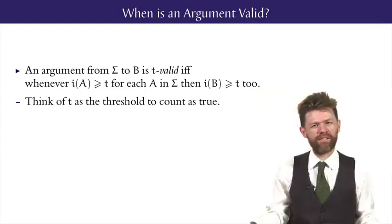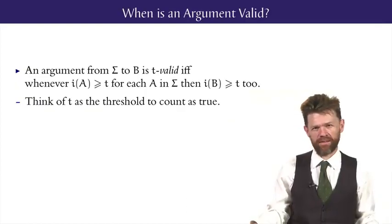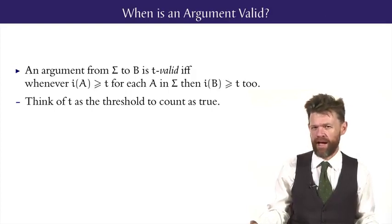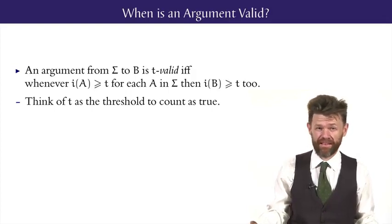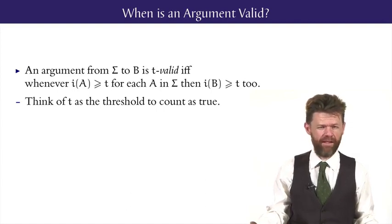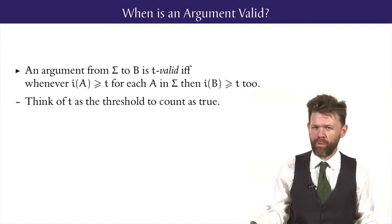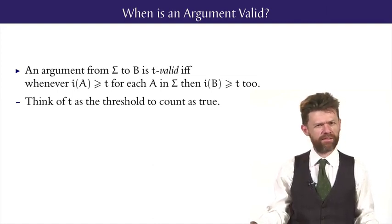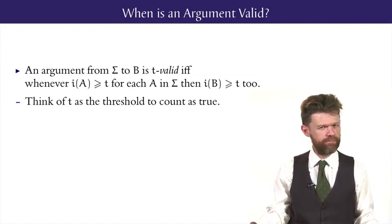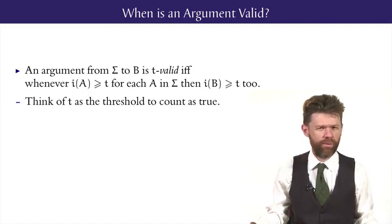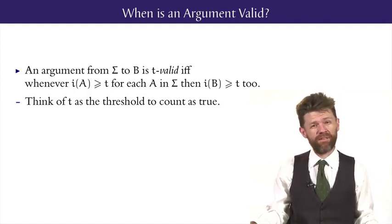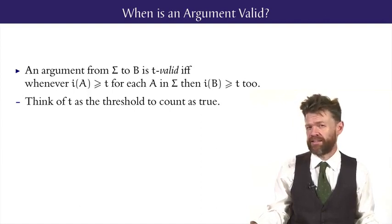Now, in the setting of Lukasiewicz's infinitely valued logic, we should ask the question about when an argument is valid, because our aim is to show that the Sorites' argument is actually invalid. But what does validity mean here? Now, the general idea of validity is the truth transfer from premises to conclusion. But now, what do we need in a truth transfer? What counts as true enough? We can't really tell, because we've got lots of different ways that things could be true to different degrees.